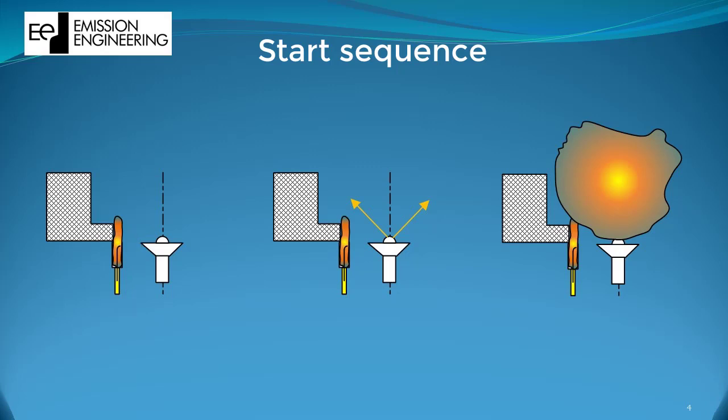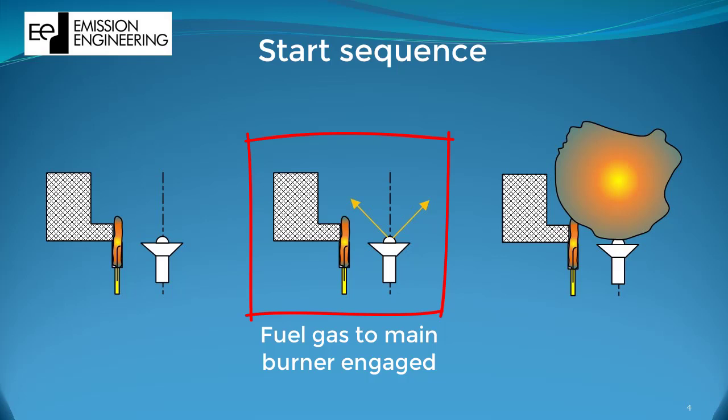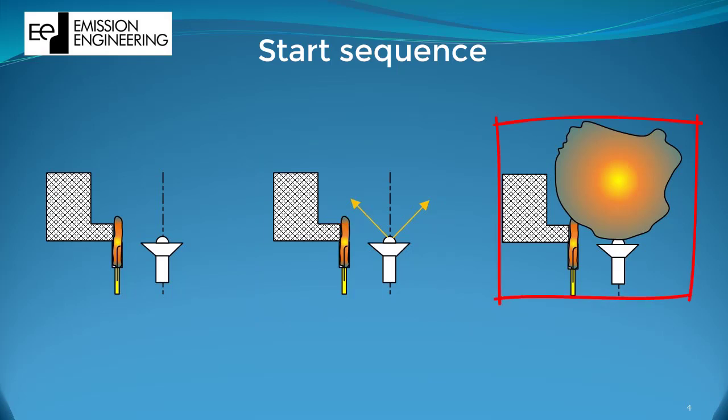In the very moment the main burner kicks in, the pilot flame delivers the ignition source for the main flame and the main flame comes on. So far so good, but now comes the stuff that can go wrong.